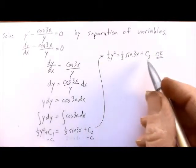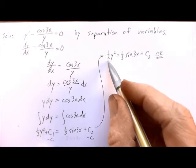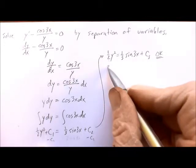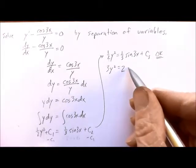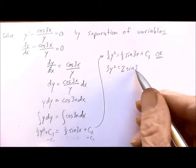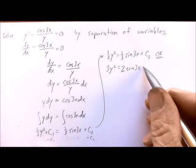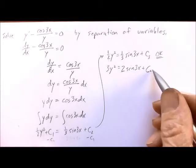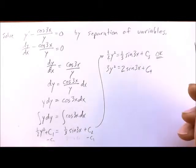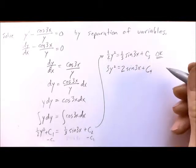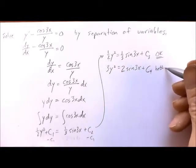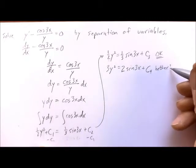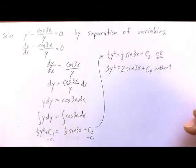If we were to multiply both sides of this by 6, 6 times a half is 3, so we'd have 3y squared. 6 times a third is 2, so we have 2 sine 3x. And of course we'd have to take 6 times c3 which would be some other constant c4. So we could put our answer in this form. The question is, is that better? Not necessarily, but at least it has no fractions in it.